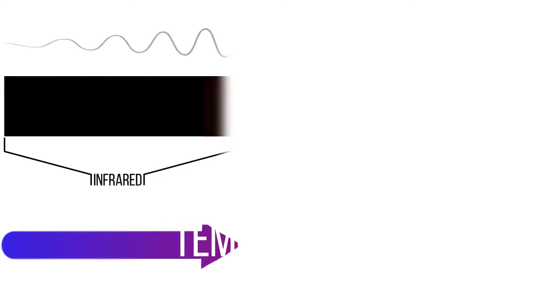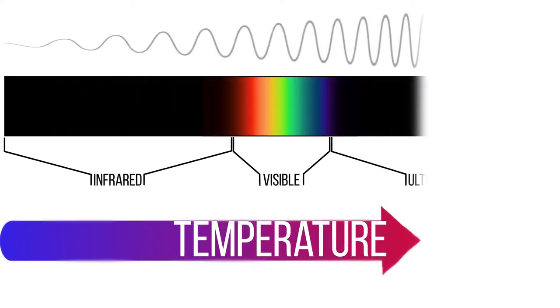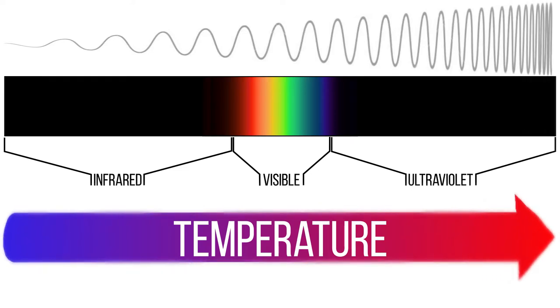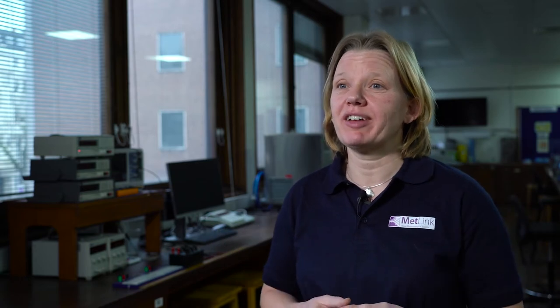All objects absorb and emit electromagnetic radiation. The quantity of radiation they emit increases as the body gets hotter. The type of radiation emitted also changes with temperature. The electromagnetic radiation an object emits is spread over a range of different frequencies and wavelengths, and that range shifts to shorter wavelengths as the body gets hotter.